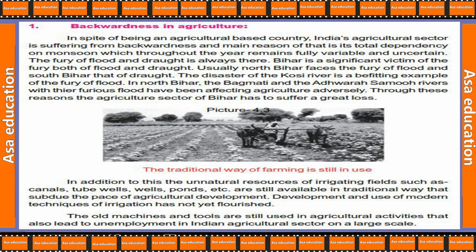Besides natural factors, unnatural irrigation resources such as canals, tube wells, and ponds are available but only in the same old traditional way, which subdues the pace of agricultural development. Development and use of modern irrigation techniques has not yet flourished. Old machines and tools are still used in agriculture, leading to unemployment in the Indian agriculture sector on a large scale.